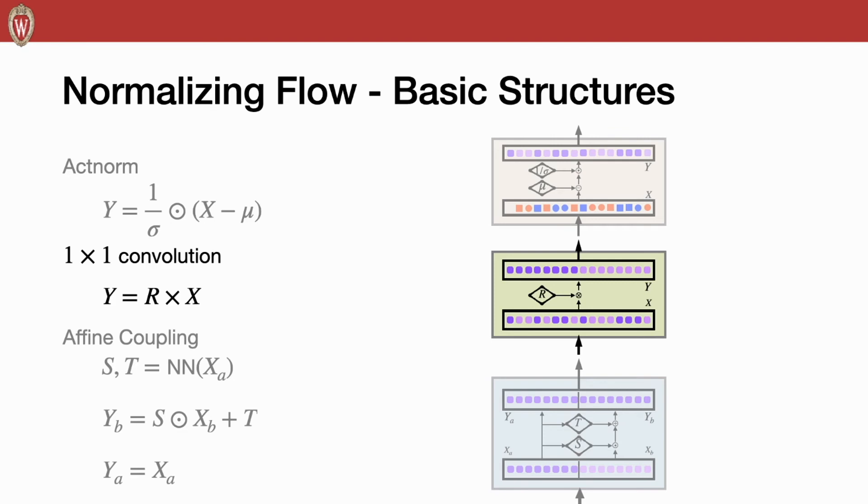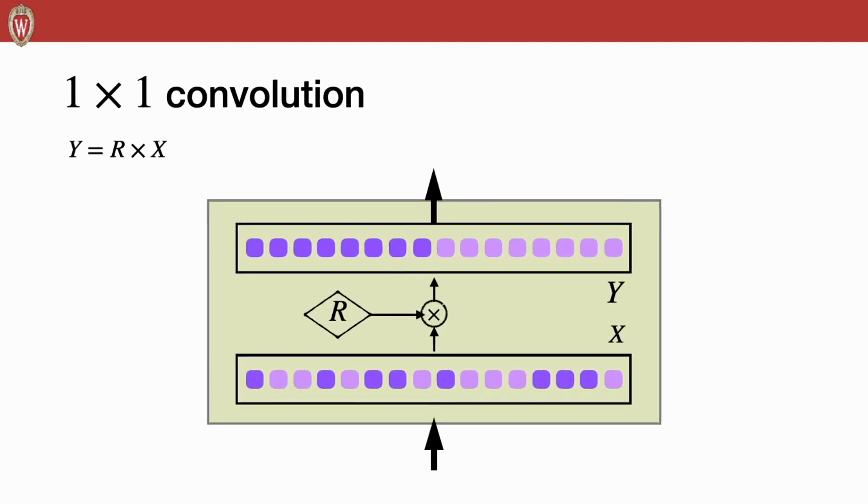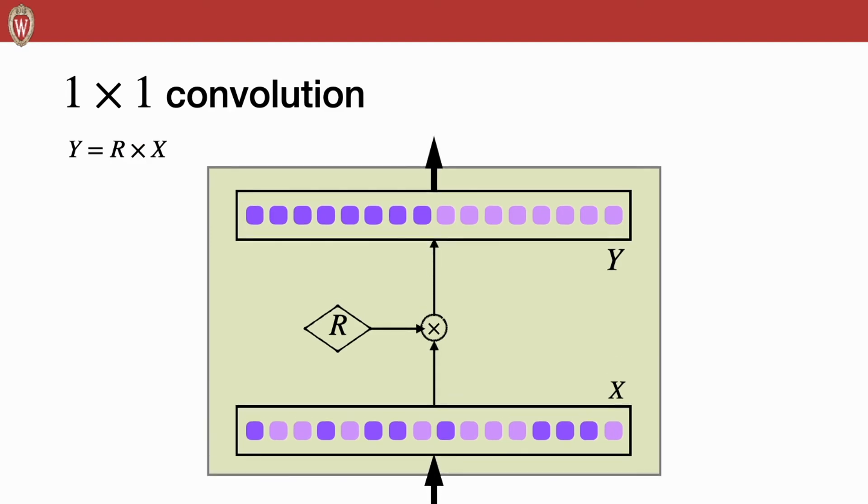Then we can look at the one by one convolution. The only operator required here is the multiplication. Thus, to extend it into the manifold, similar to the ACNORM layer, we can apply the chart map to change the operator in the tangent space.